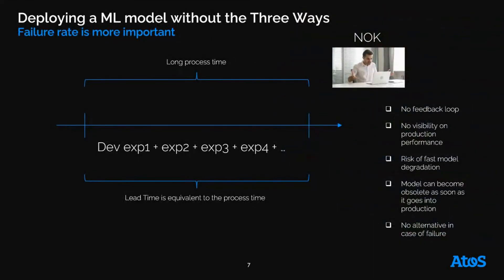Let's see what can happen when you do not adopt the Three Ways. The data science team works on its own and keeps experimentation in its lab. The real risk is that you only have one model — one candidate — when the customer starts using the solution. If the model performs poorly, you are stuck and it will take more time to find a solution, because there is no feedback loop, no visibility on production performance, and no alternative in case of failure.